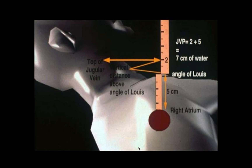After positioning the patient properly, we place the ruler at the sternal angle, which is five centimeters above the right atrium. We hold another ruler horizontally at the top of the jugular venous pulsation, and we note how many centimeters this is above the sternal angle.